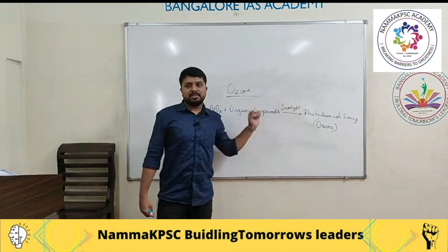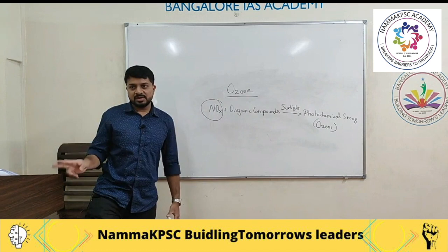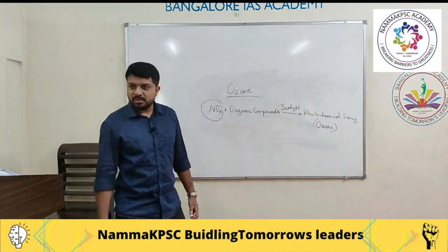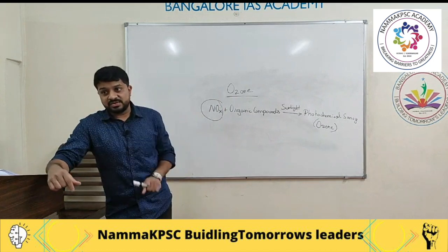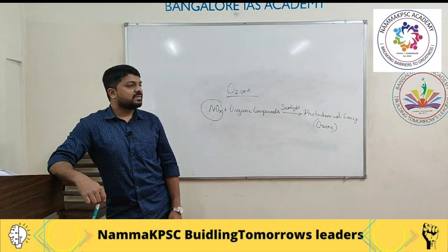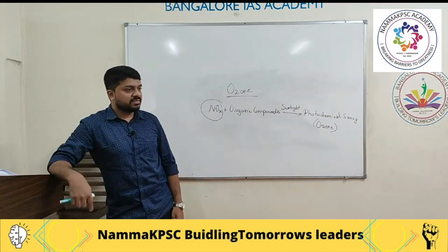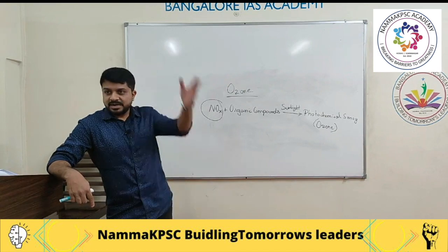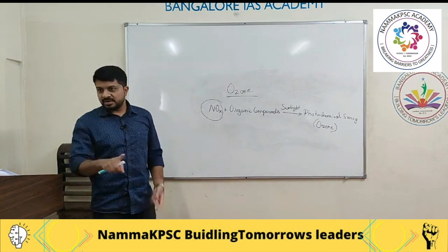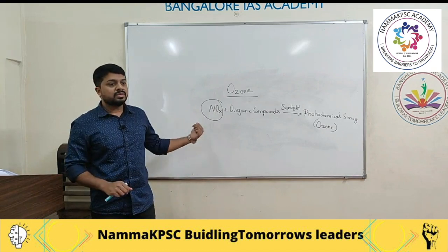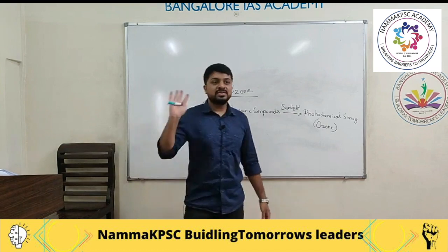This reaction happens in the presence of sunlight. Now, how are oxides of nitrogen produced? You have to recall — through nitrification, where bacteria fix nitrogen, oxides of nitrogen can be formed. Apart from that, there is one more natural way: lightning. So naturally, nitrogen oxides are formed in two ways — one by bacteria and the other by lightning.